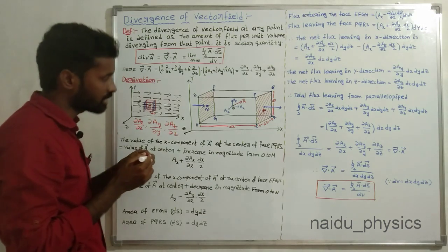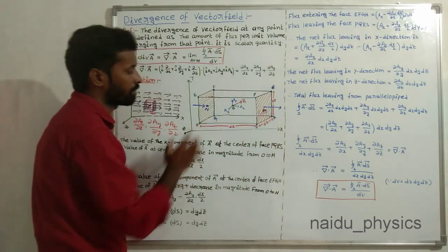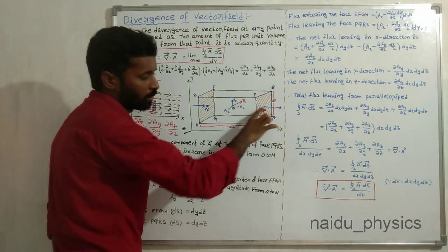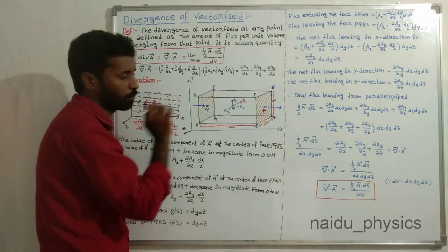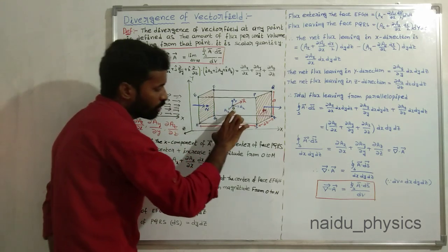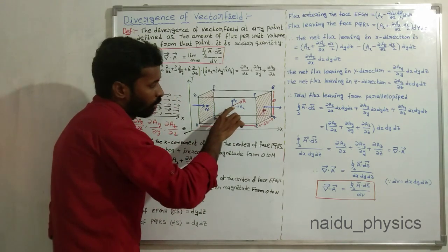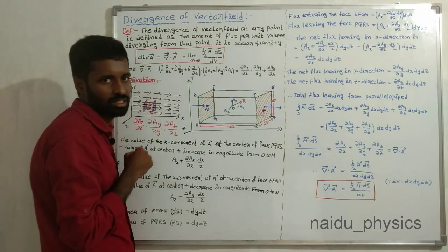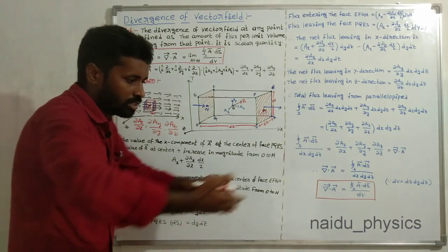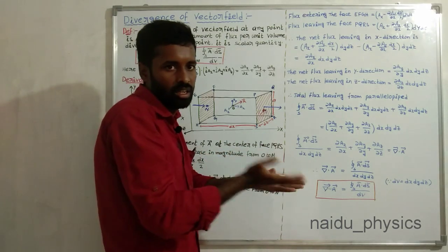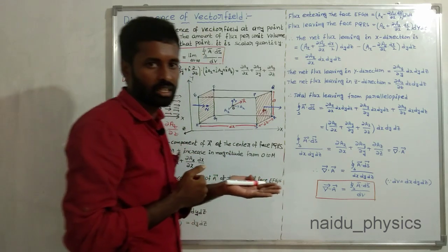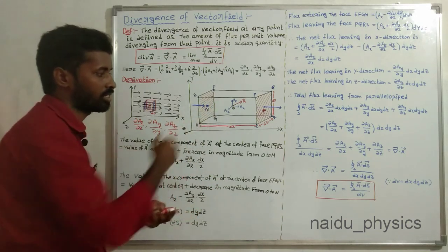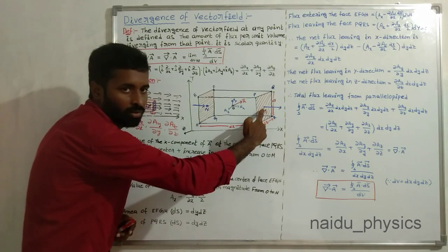Now we consider two surfaces PQRS having center M and EFGH having center N. Our aim is to find the x-component of A-bar at point M and at point N. When we go from O to M, the velocity of the x-component increases. When we go from O to N, the velocity of the x-component decreases — similar to water flow: moving with the flow increases velocity, moving against it decreases velocity.